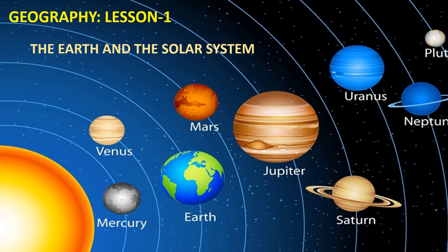Till now we have learnt about the sun and the stars, the universe, nebula, what are stars, what is constellation, galaxy, planets, sun, solar system — all 8 planets and their features.